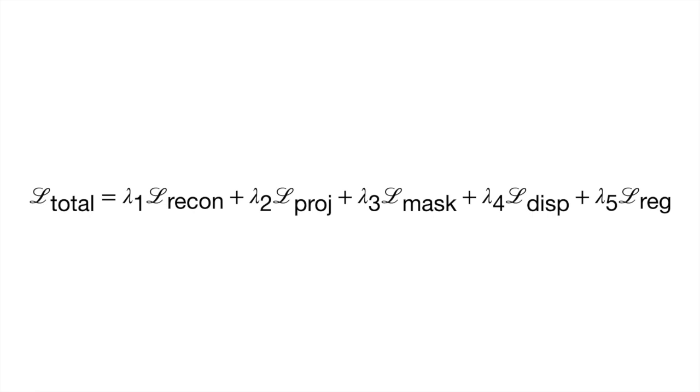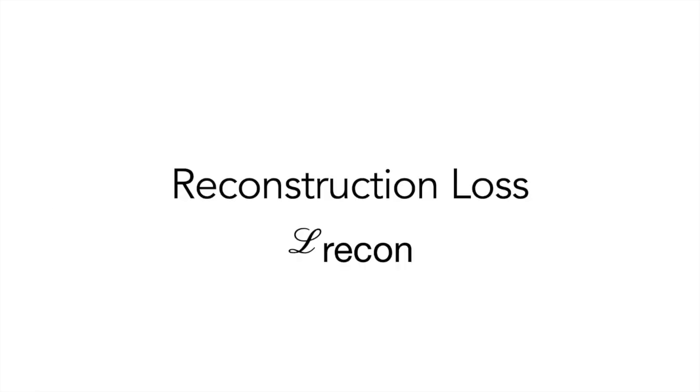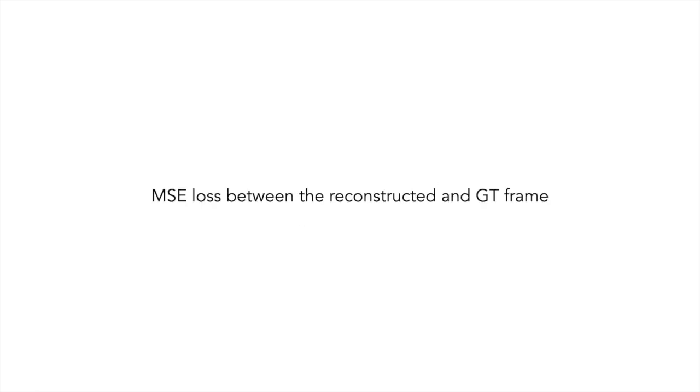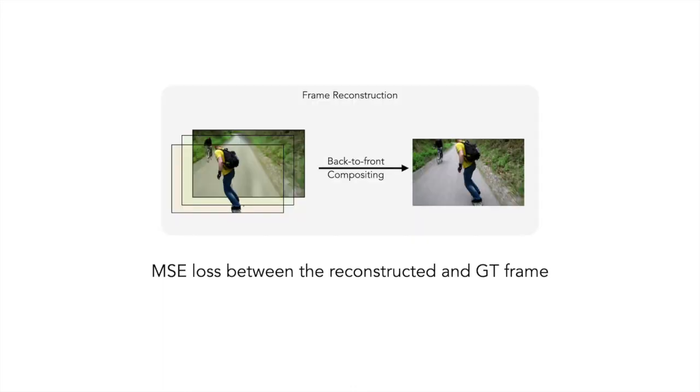In addition to the projection consistency loss, we use a number of loss terms to learn the model. These include the reconstruction loss, which estimates the mean square error between the reconstructed frame and the ground truth frame. The frame reconstruction is obtained by back-to-front compositing of the predicted layers.